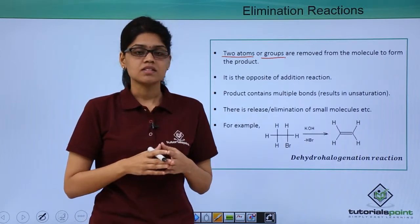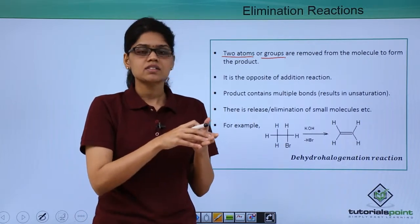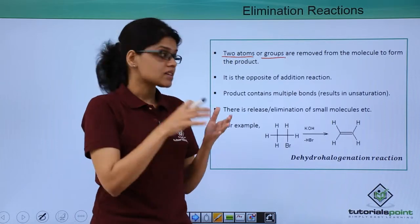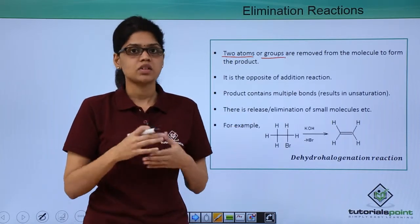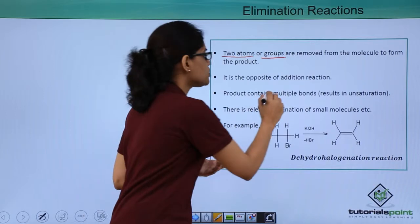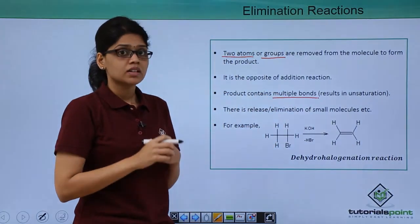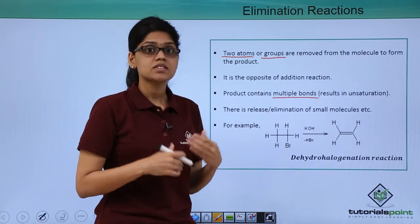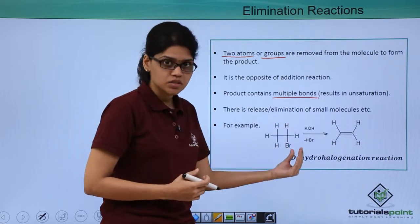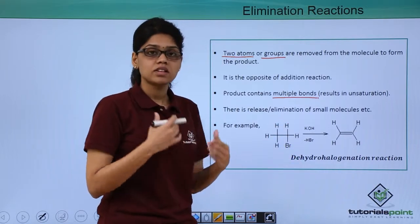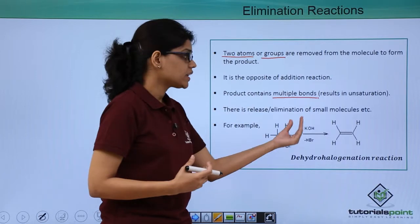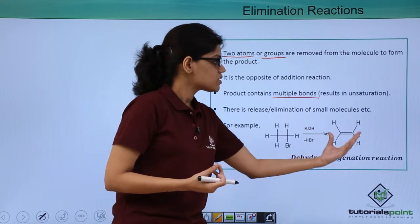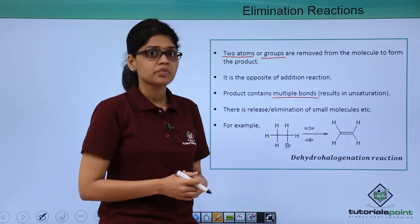In addition reactions, an unsaturated starting reactant gives us a saturated product. In elimination reactions, a saturated starting reactant gives us an unsaturated product — that is, the product essentially contains multiple bonds. For example, the starting reactant CH3CH2Br, when treated with a strong base like KOH, results in the elimination of a small molecule like HBr and gives us a final product which contains multiple bonds.